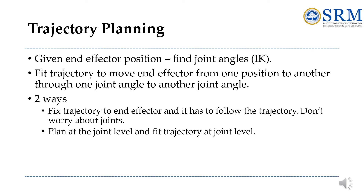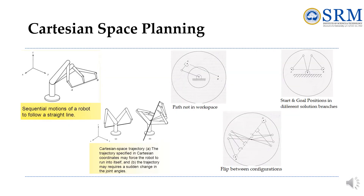Given the end effector position, the joint angles must be found. First, fit the trajectory to move the end effector from one position to another, through one joint angle to another. This can be done in two ways: fix the trajectory to the end effector and have it follow the trajectory, or plan at the joint angle level and fit the trajectory at the joint level. This picture represents Cartesian space trajectory planning. The first picture shows sequential motions of a robot following a straight line; the second shows Cartesian coordinates forcing a change in joint angles; the third shows a path not in the workspace; the fourth shows a flip between configurations; and the fifth shows initial and goal positions in different solution branches.